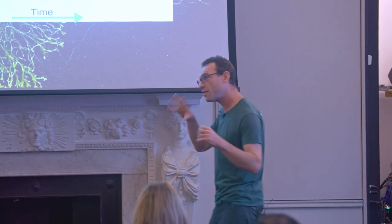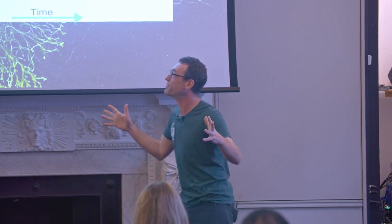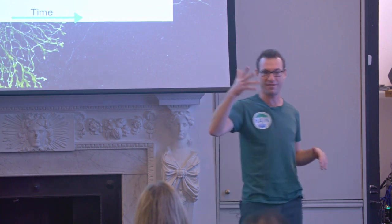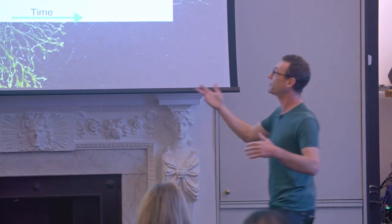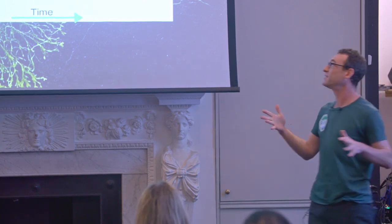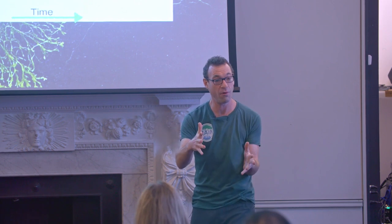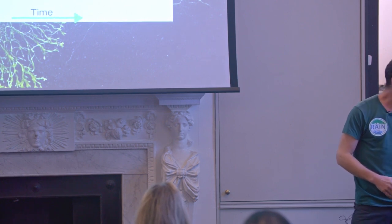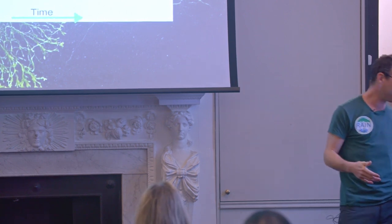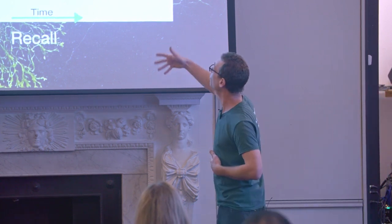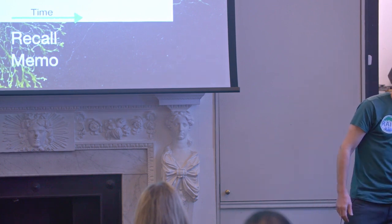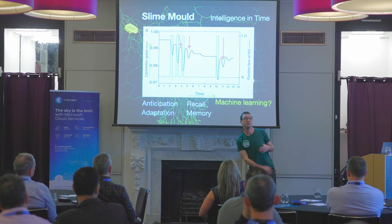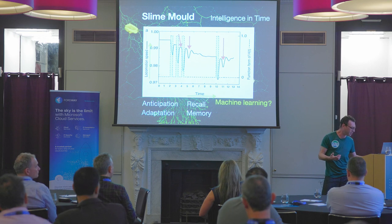If you blast cold, dry air at slime moulds, they don't like it, so they retreat. But if you blast cold, dry air at them for five minutes on the hour every hour, they start to do something amazing. The second time you do it, they retreat further. The third time, they've already spotted the pattern and they're starting to anticipate — five minutes before, they're already starting to retreat. On the fourth hour they adapt. And if you wait a while and repeat this, they will recall and restart that pattern. You may be noticing some connections with machine learning there.